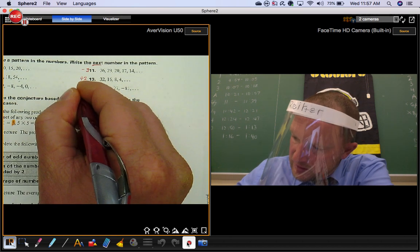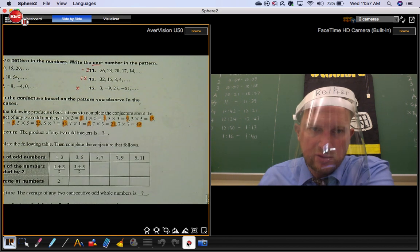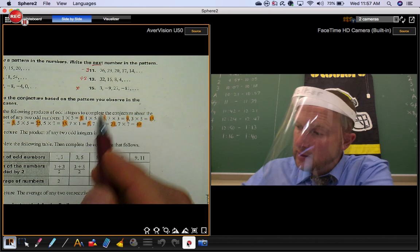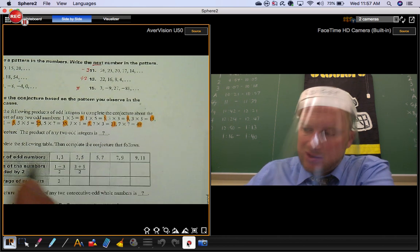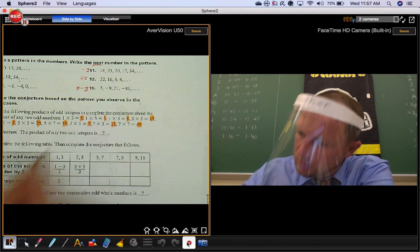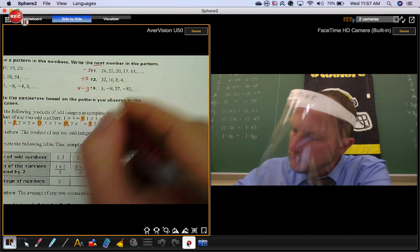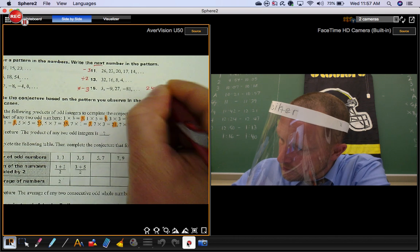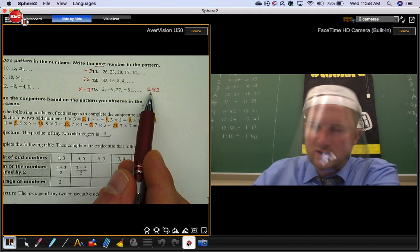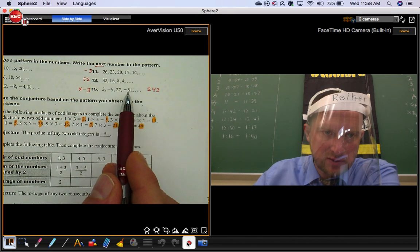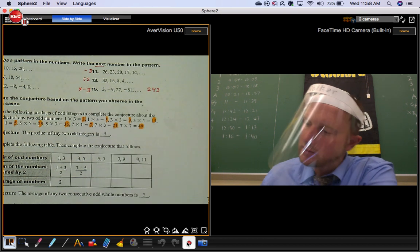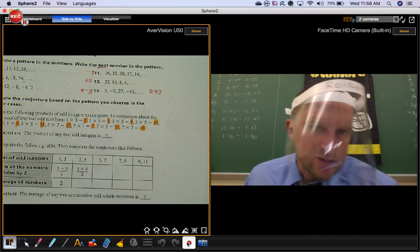So we're doing something with multiplication and three. How do you get the signs to change? Multiply by negative three. So obviously your next term is going to be positive. Just multiply that guy by three. So you should get positive 243.